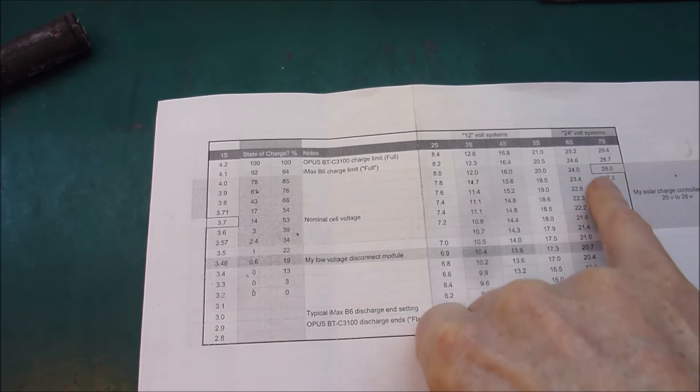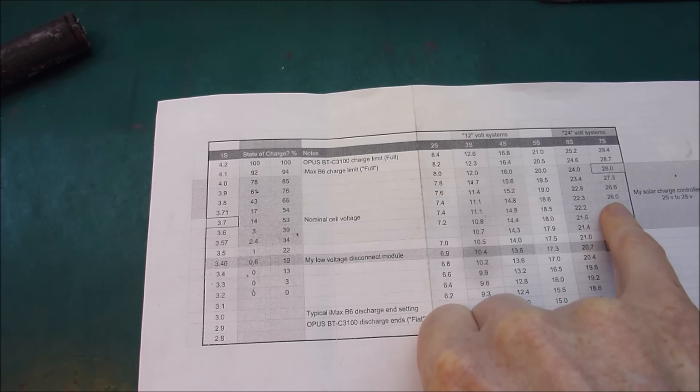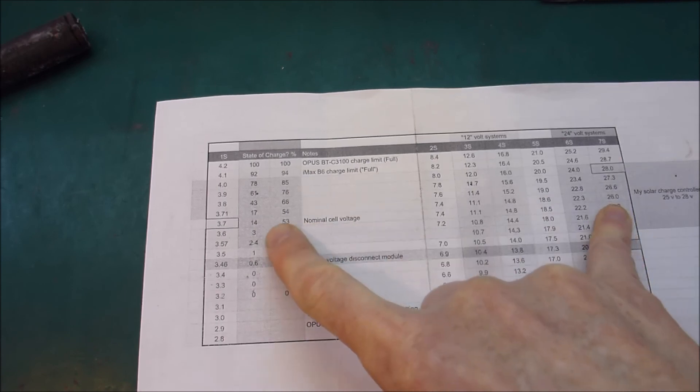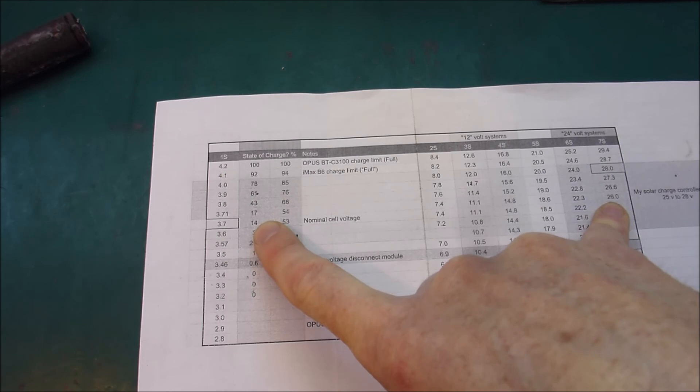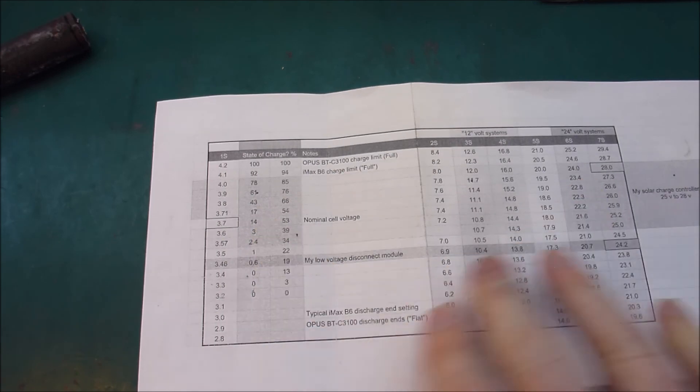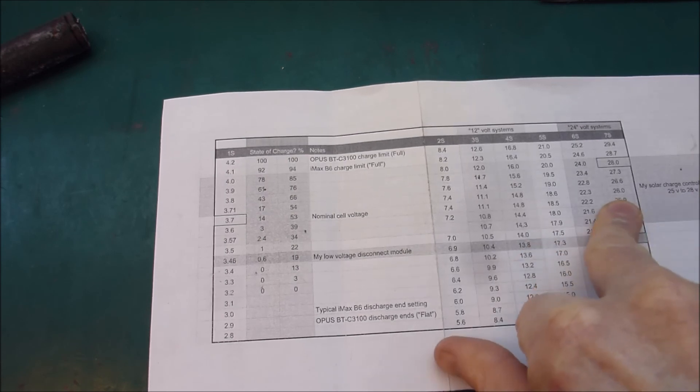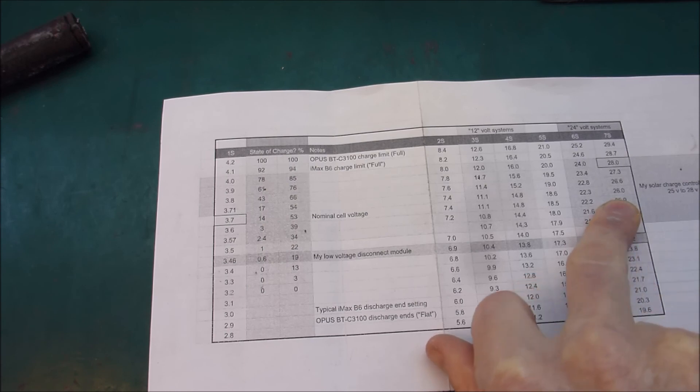In practice what happens is I come in and every day I look at the overall voltage and if it's below 26 volts I start to get nervous. I know I'm getting below my 40% state of charge lower bound.